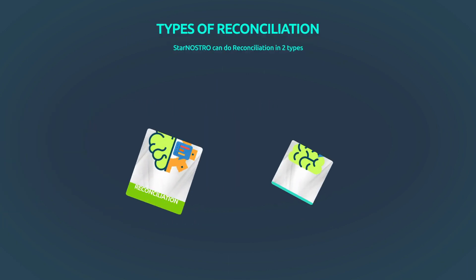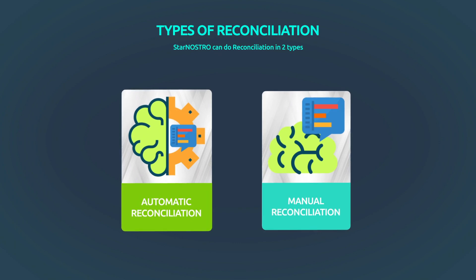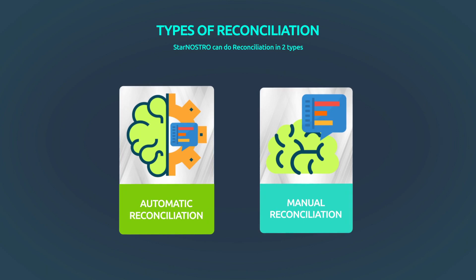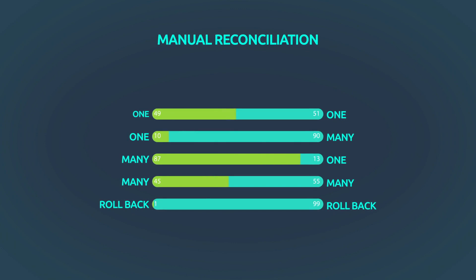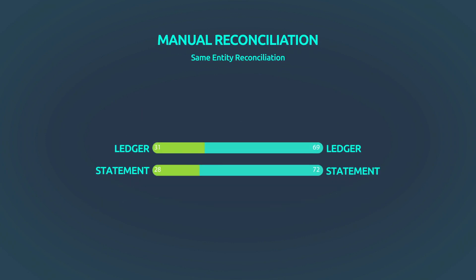Typically, Star Nostro can do reconciliation in two types: automatic reconciliation and manual reconciliation. Automatic reconciliation is done based on key fields. Manual reconciliation supports one-to-one, one-to-many, many-to-one, many-to-many, and rollback match transaction reconciliation.